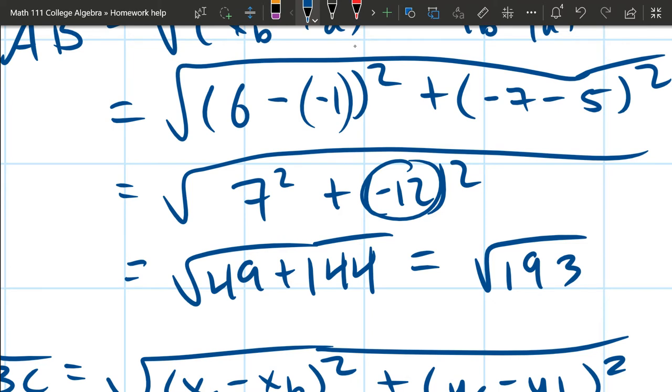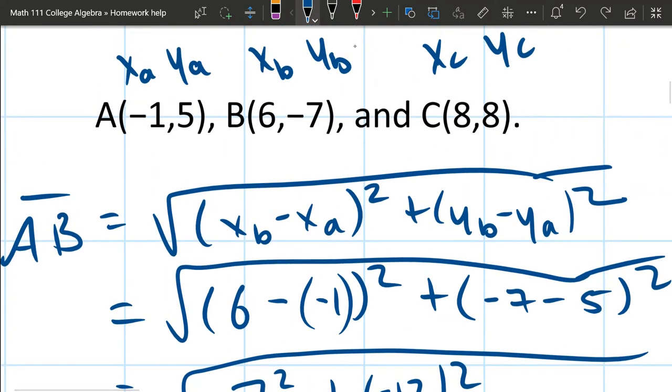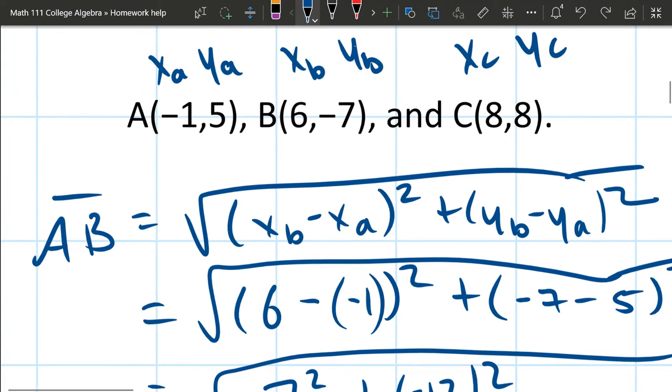So make sure that your numbers are positive here. Another way to mess this up is you might accidentally put maybe the x-coordinate for the C-point in here instead of the x-coordinate for the B-point in here. So just be super careful. I'm trying to find the AB distance. So everything here should be A-B-A-B. So make sure you pay attention to your subscripts.